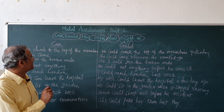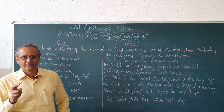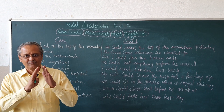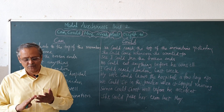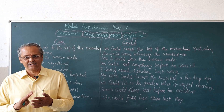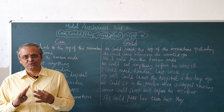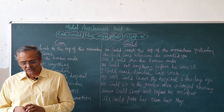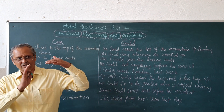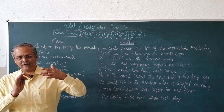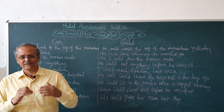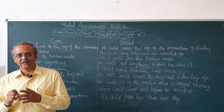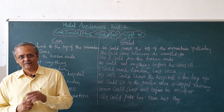In the last video on modal auxiliaries, we saw the techniques of using all the modal auxiliaries — will, would, shall, should, can, could, may, might, must, need, ought to, etc. We saw certain basic features of using the modal auxiliaries, how main verbs function, and what are the primary and modal auxiliaries. Now we will see in detail some of the modal auxiliaries, their grammar and usage.